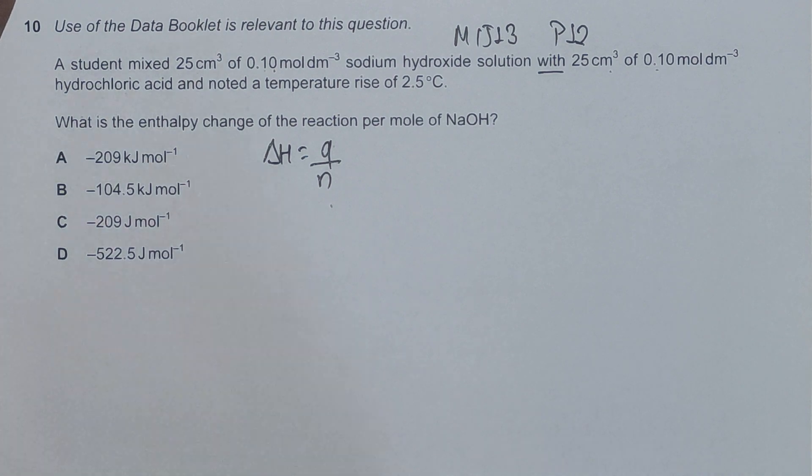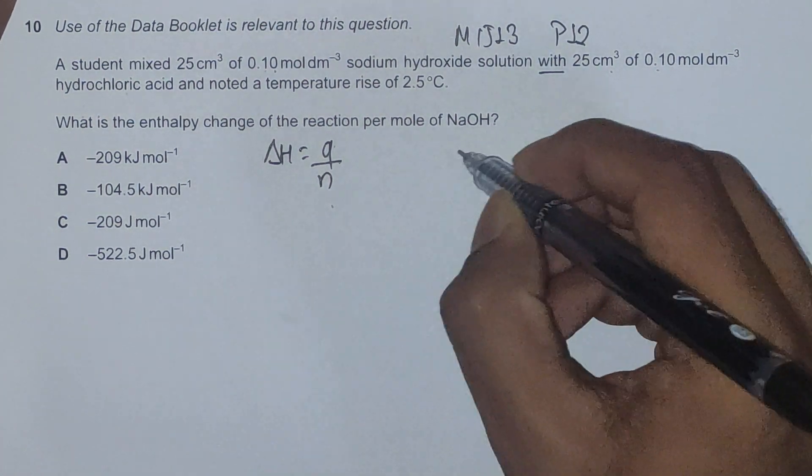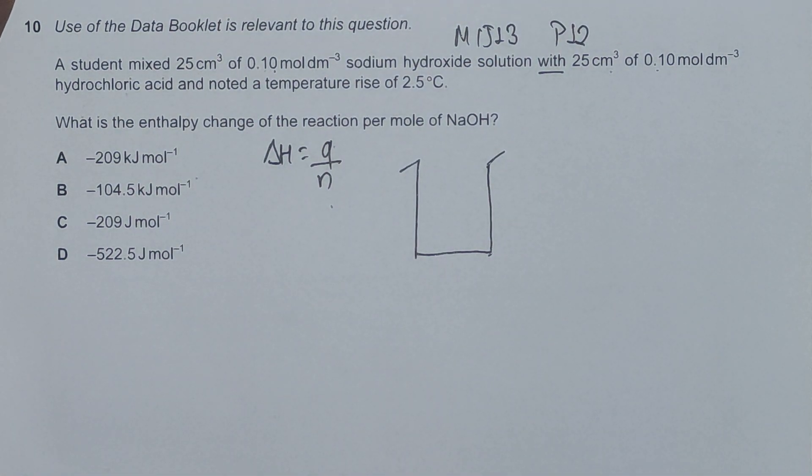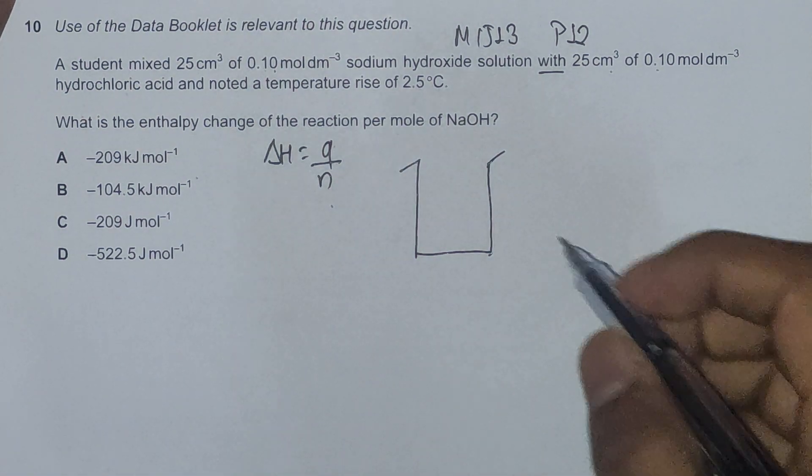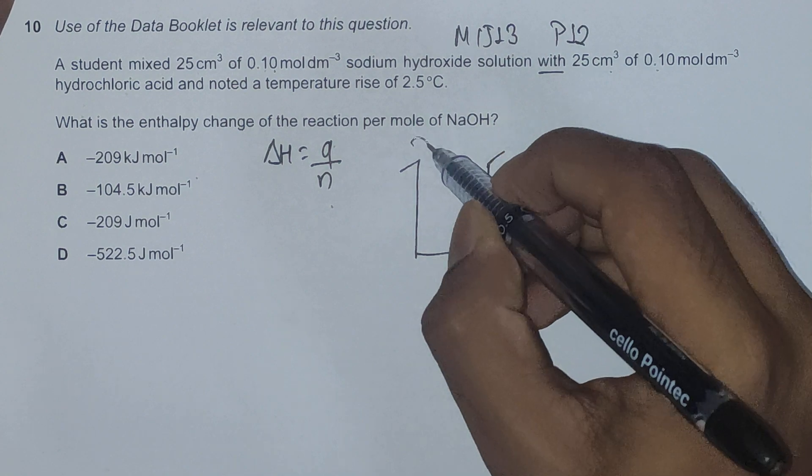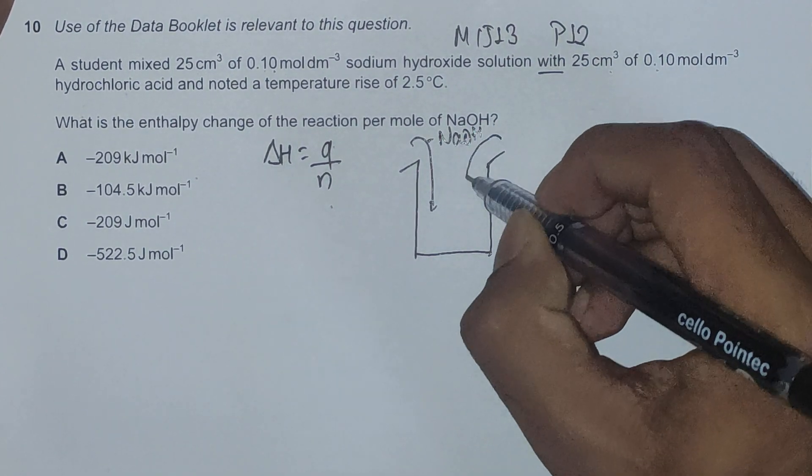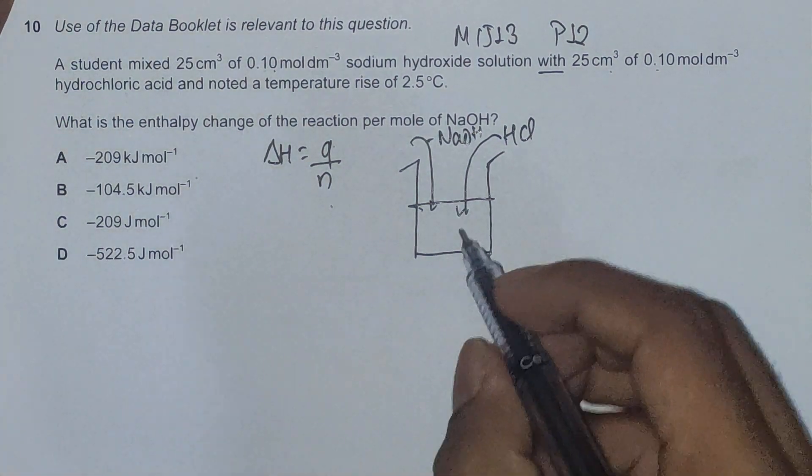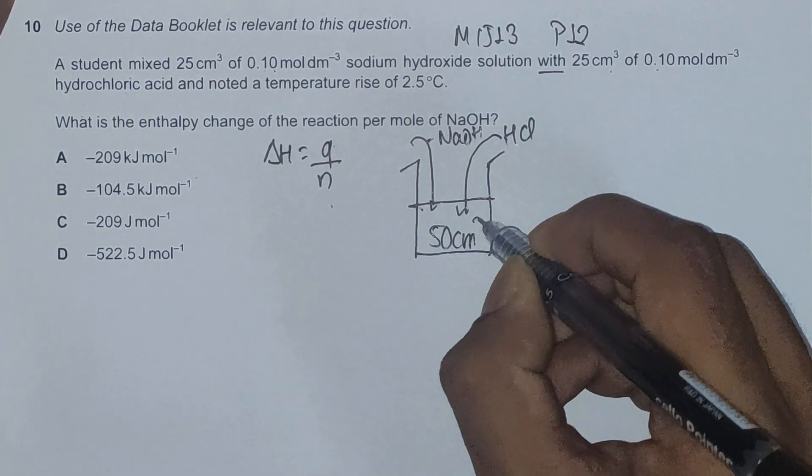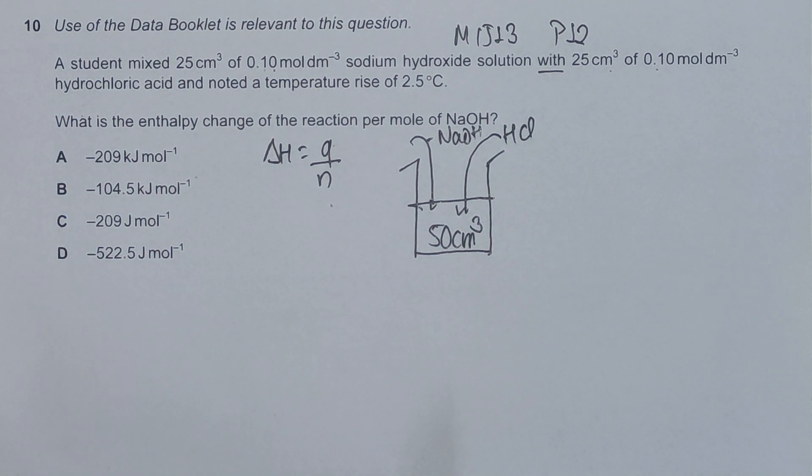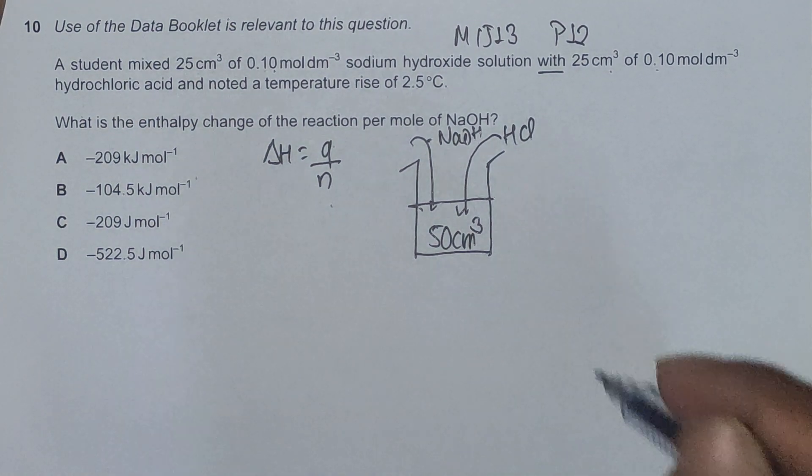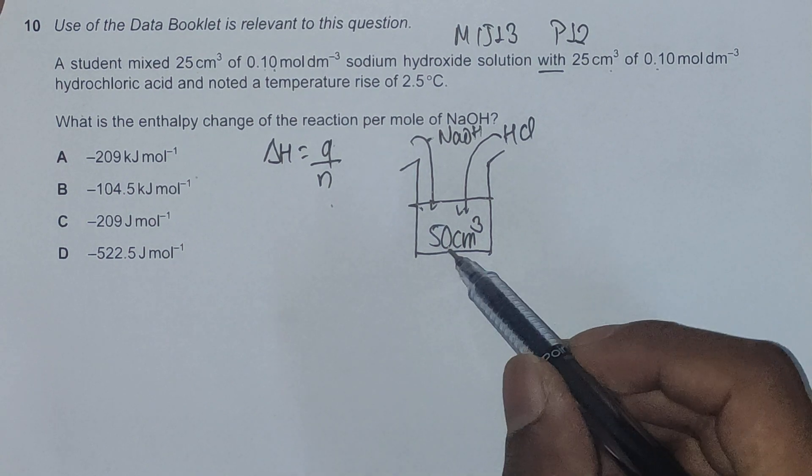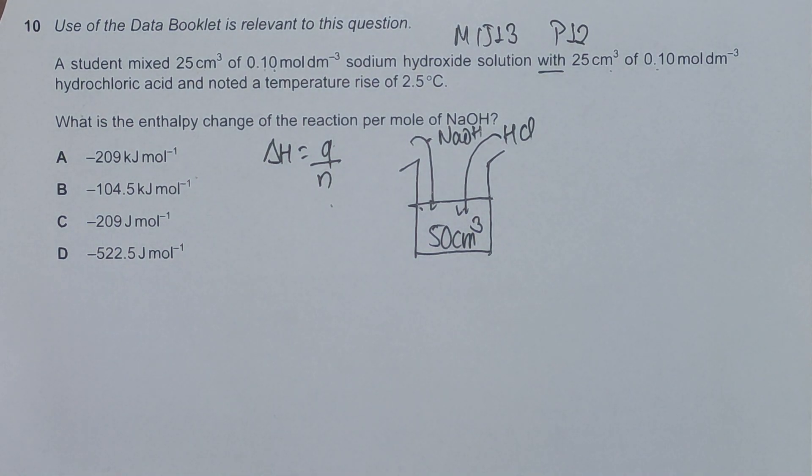Basically what is happening in this reaction is we have a vessel here, or a cup, which we normally do in paper 3 enthalpy change experiments. We are pouring 25 cm³ of NaOH and 25 cm³ of HCl. The total volume present in this polystyrene cup is 50 cm³ of NaOH plus HCl. The products will be sodium chloride and water.